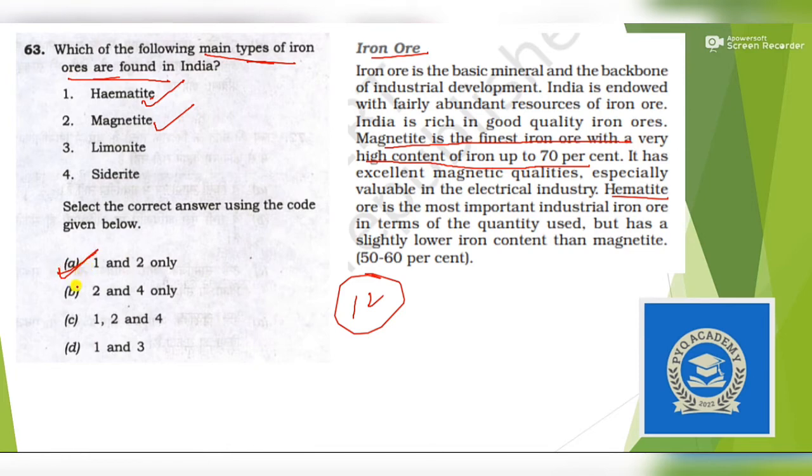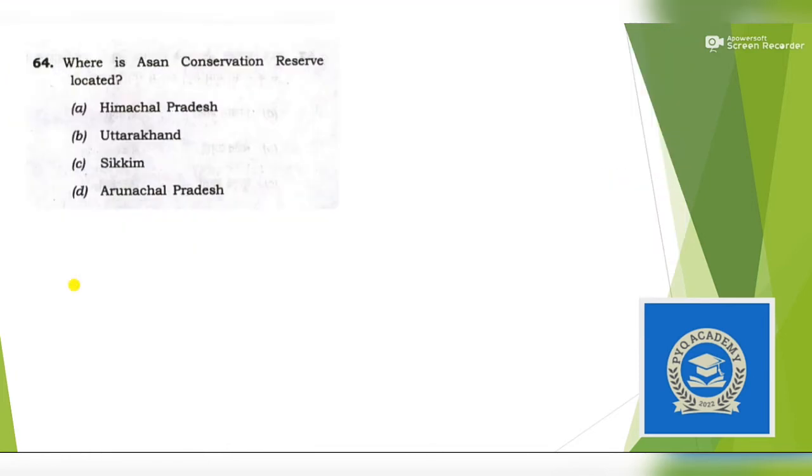Next question: Where is Asana Conservation Reserve located? This question was in the paper due to current affairs, but in future it can become a static geography question. Answer is Uttarakhand. It is a Ramsar site. Answer is option B.